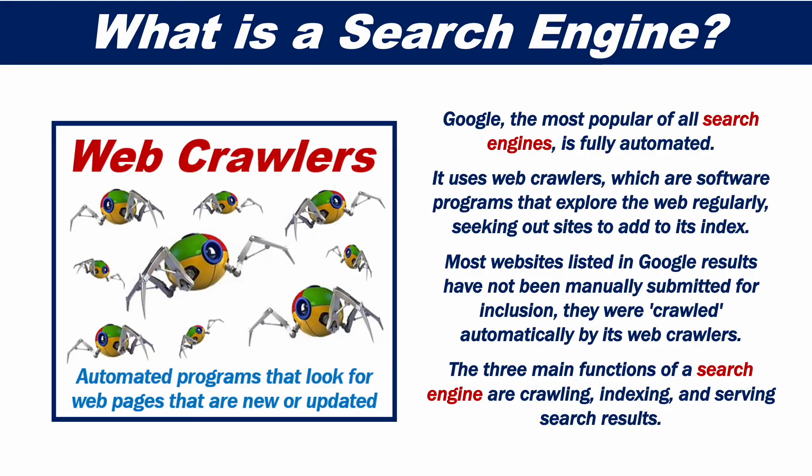Google, the most popular of all search engines, is nearly completely automated. It uses web crawlers, which are software programs that explore the web regularly, seeking out sites to add to its index.